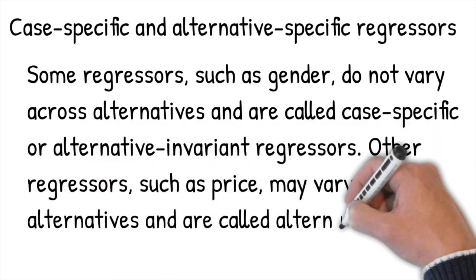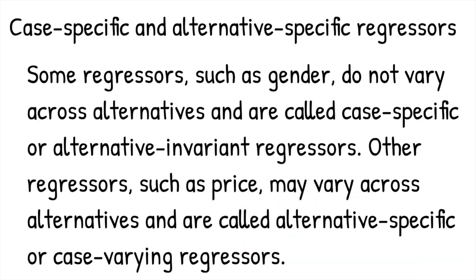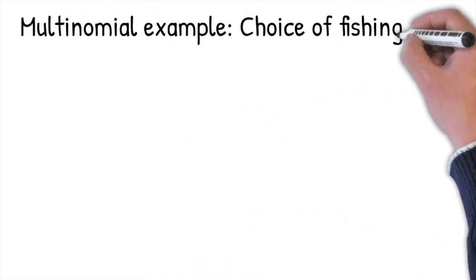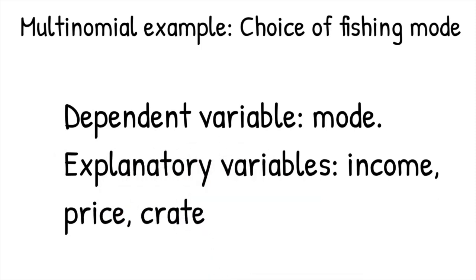Some regressors, such as gender, do not vary across alternatives and are called case-specific or alternative-invariant regressors. Other regressors, such as price, may vary across alternatives and are called alternative-specific or case-varying regressors. In our fishing mode example, the dependent variable is the fishing mode, which is a categorical variable. Income is a case-specific regressor.